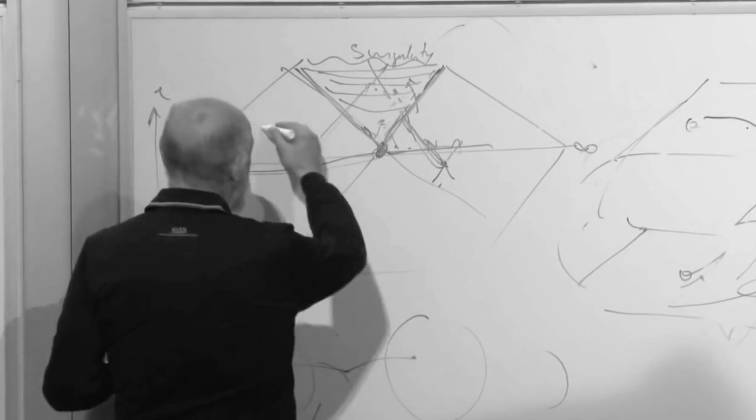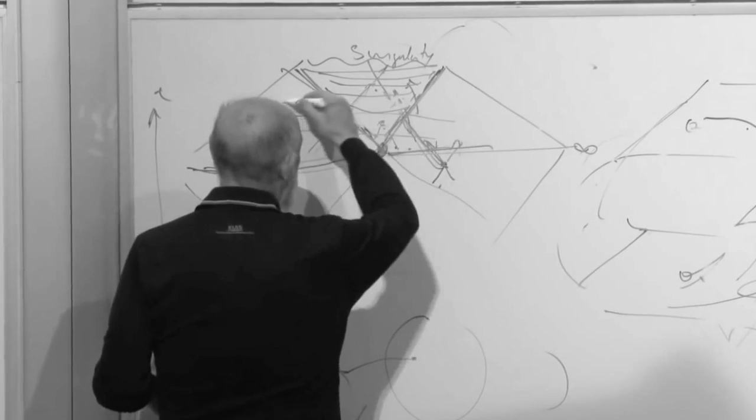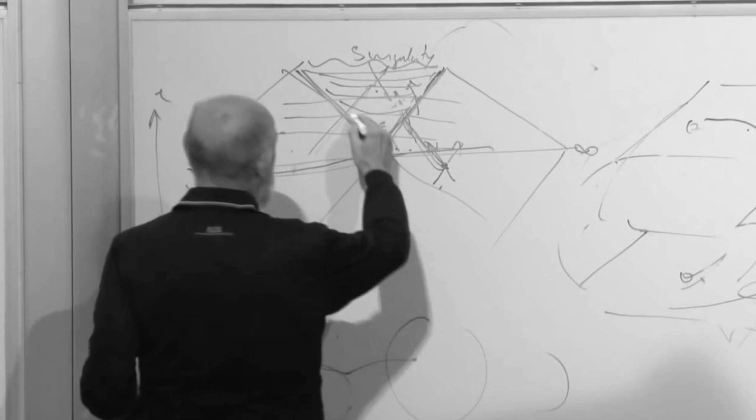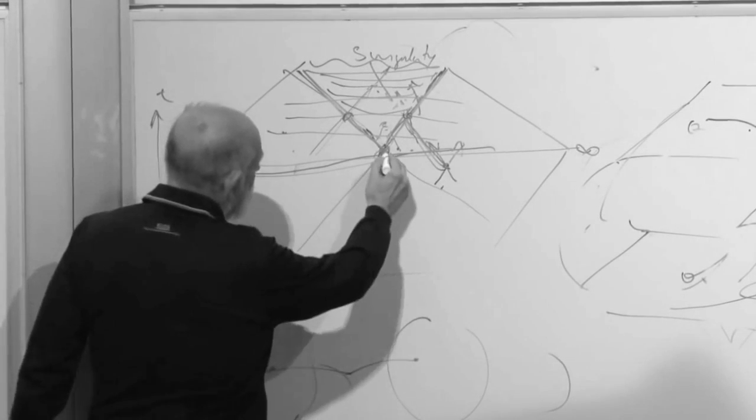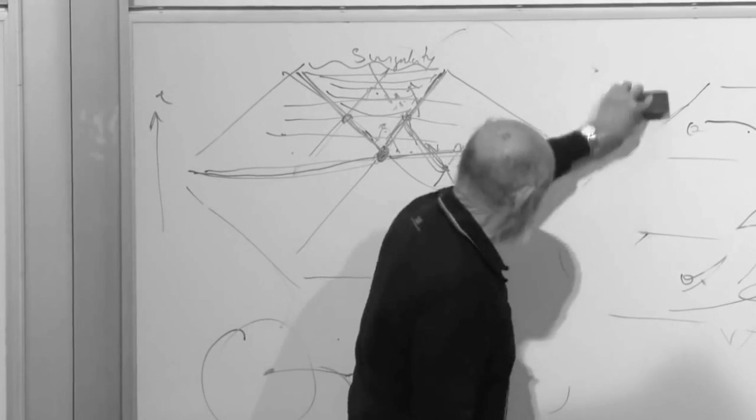As time goes forward, let's just draw time going forward like that, the Einstein-Rosen bridge grows. It started with the horizons touching each other.